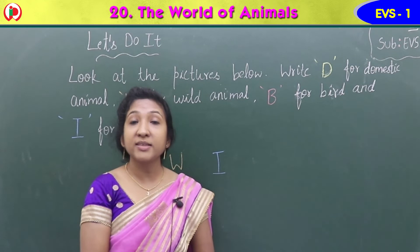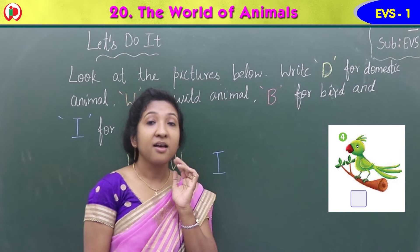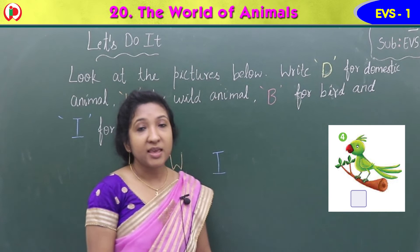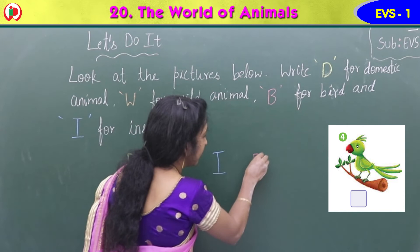See the fourth image. Which animal is this? It is a bird that can fly; it has wings to fly. It is a parrot. It is a bird, so you have to write B.